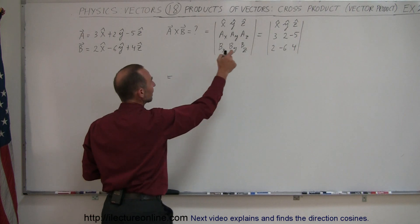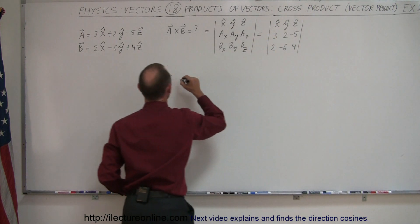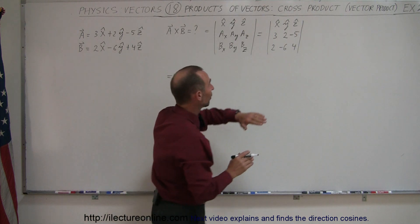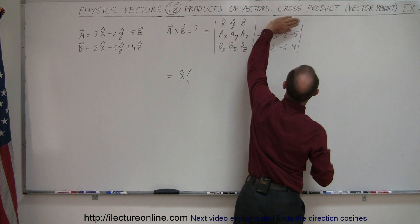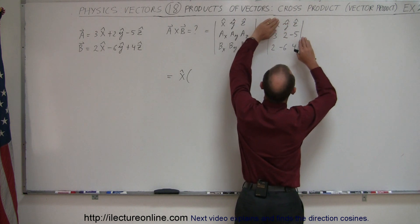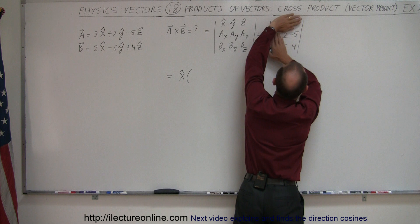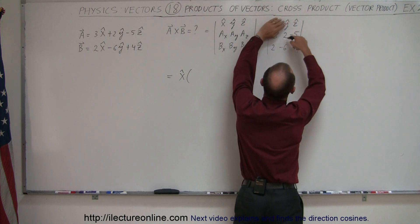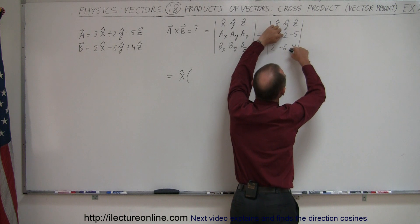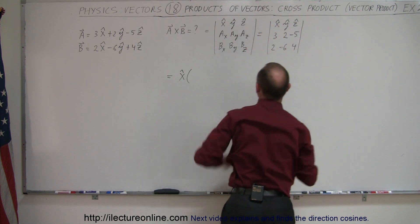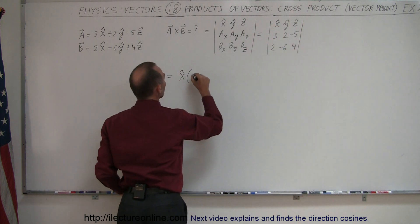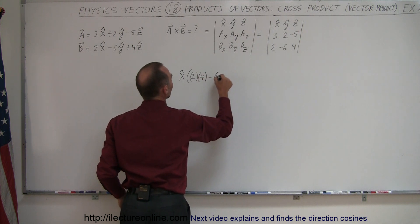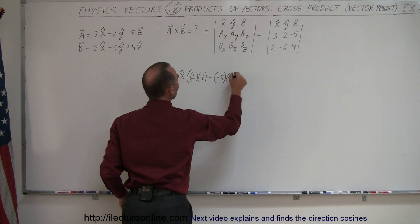So all we have to do now is solve the determinant. We take the first element — the unit vector in the X direction — and multiply it by the two-by-two sub-matrix found by covering up the top row and the column that X belongs to. That gives us two times four minus negative five times negative six.